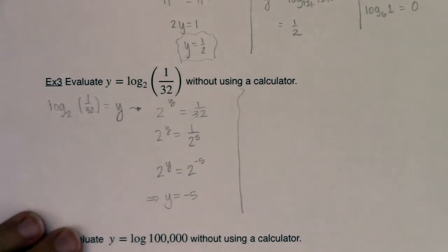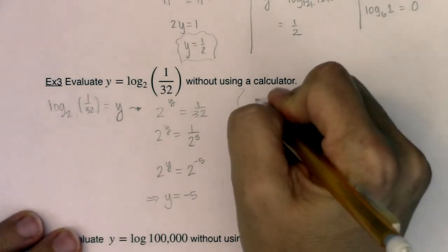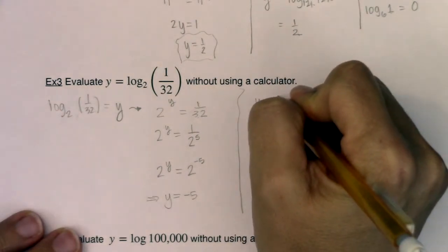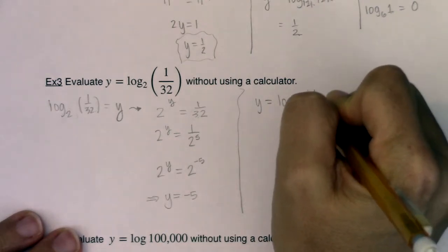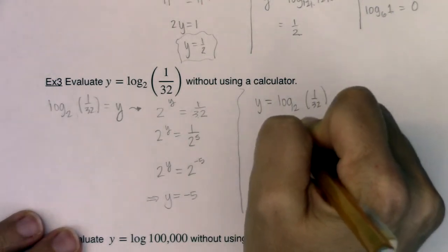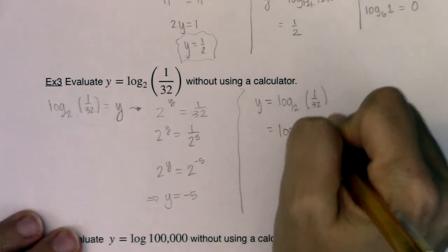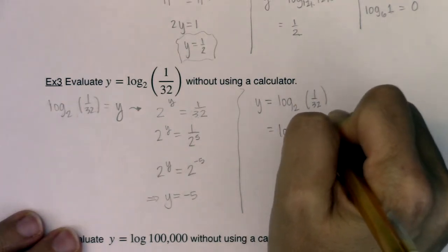Okay, now this is all fine and good. I also want to work this using properties of logs. So if I had y equaling log base 2 of 1 over 32, I could say this was equal to log base 2, and 1 over 32 is 2 to the negative 5th.